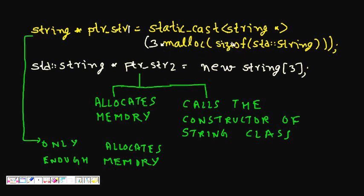This allocates enough storage for three class objects for string class. But in C++, much simpler: std::string* ptr_str2 = new string[3]. So now three objects are allocated. Now let's see the benefits. Here again memory is allocated for three objects, and it also calls the constructor of the string class.